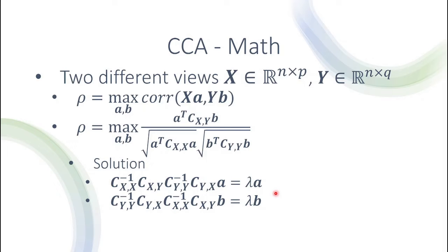We can get several different corresponding a and b vector pairs, so we expand this notation to a_i and b_i for all i, and similarly the eigenvalues are indexed by i. This is for when we want to project into more than one dimension — just as with PCA, maybe we want two or three dimensions depending on the task. We sort the eigenvalues from largest to smallest: the larger the eigenvalue from this decomposition, the more correlated the projections are in the lower-dimensional space. This is how we order the canonical pairs a_i and b_i.